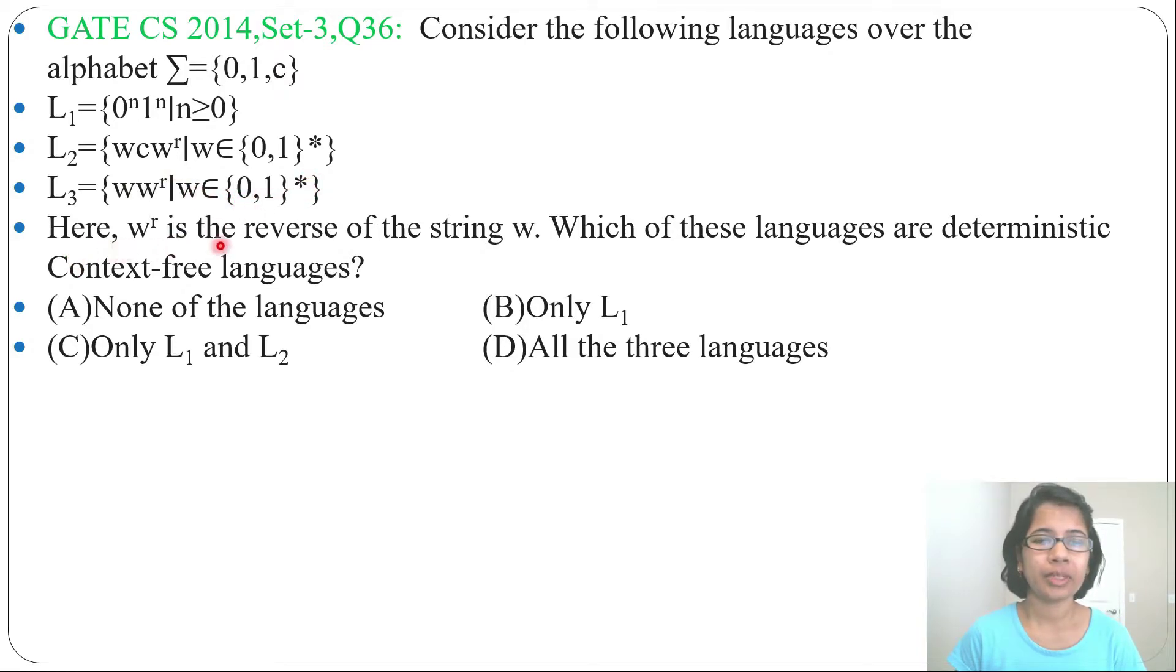Where w^r is the reverse of the string w, which of these languages are deterministic context-free languages? Four options are given.